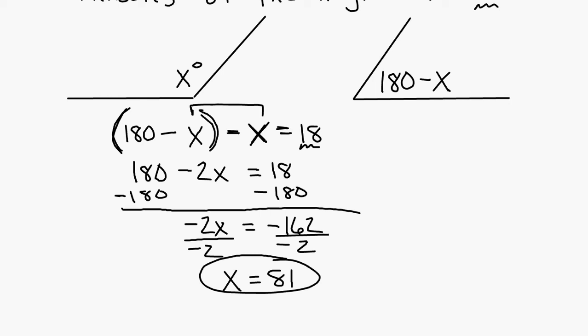And there's one of your angles. So here's one angle, which is 81 degrees, and then 180 minus 81 degrees is 99 degrees. So those are your two angle measures. Good with that?